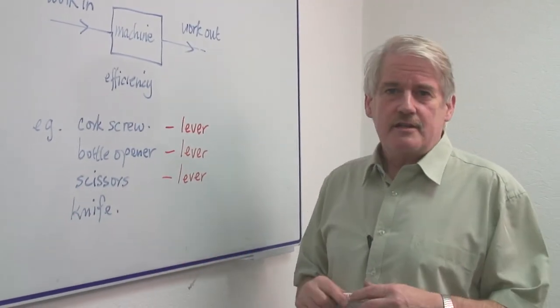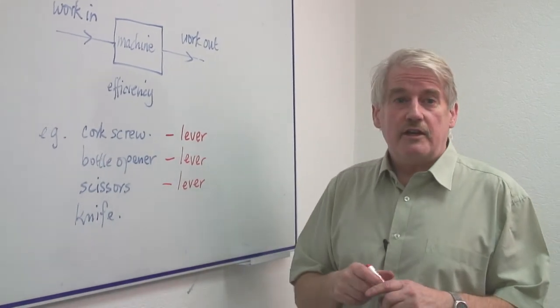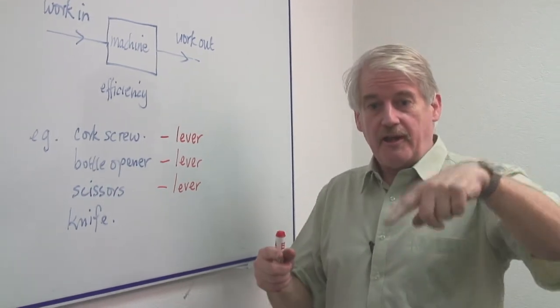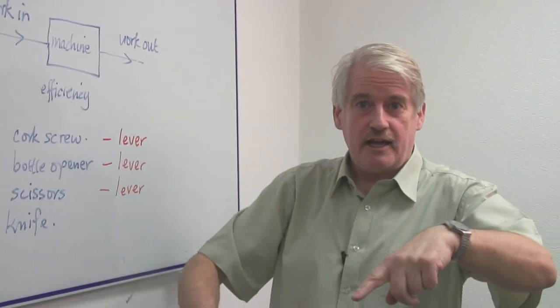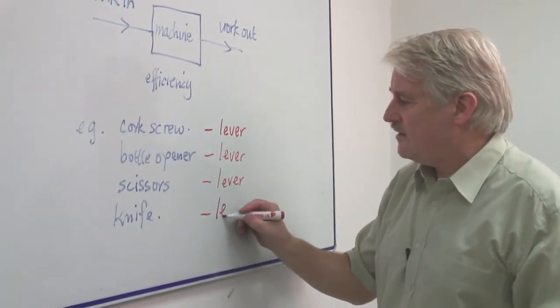Well, a knife doesn't have a fulcrum. But there is a machine involved with a knife because, again, you are applying a force. You put your finger on the end of the knife when you push down. You are creating a fulcrum with that. This also is a lever.